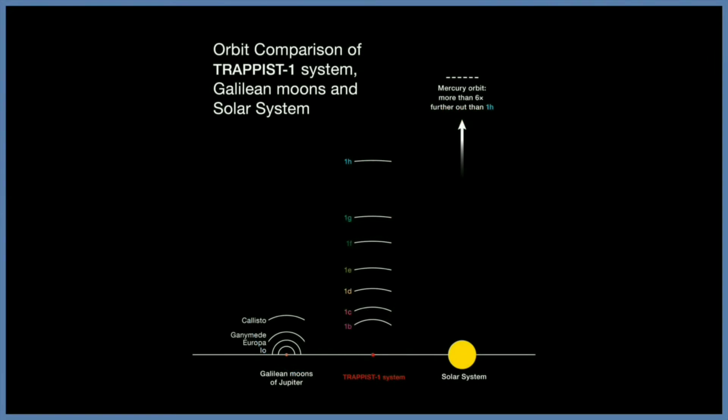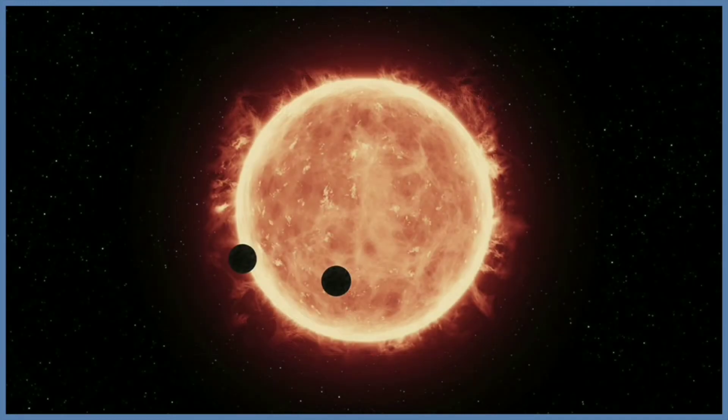If a person was standing on the surface of the planet, they could gaze up and potentially see geological features or clouds of the neighboring worlds. This means that some planets could appear larger than the moon in Earth's sky.